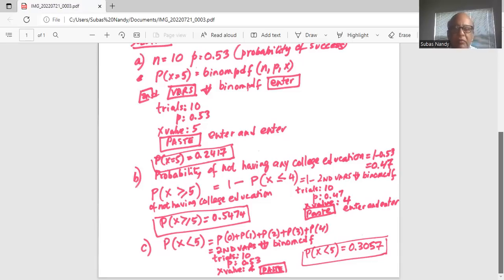Here, less than five means up to four. So binom CDF, second vars, binom CDF. Trials is 10, p is 0.53,